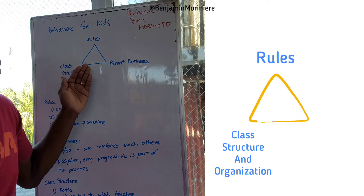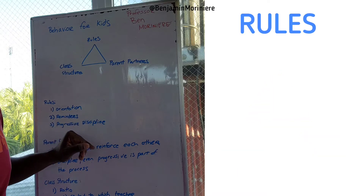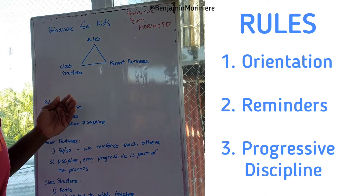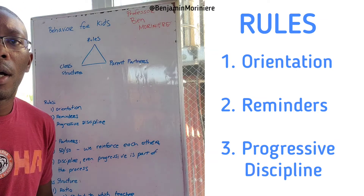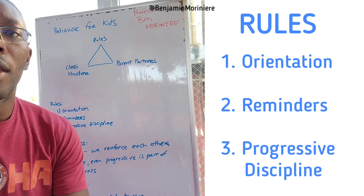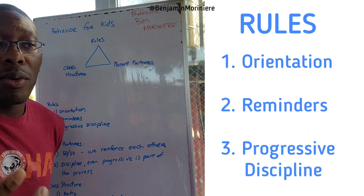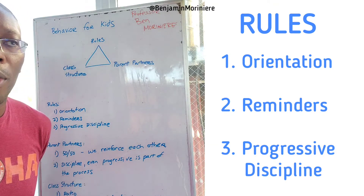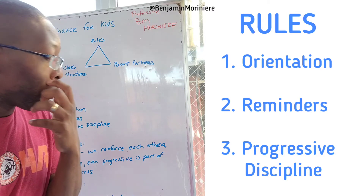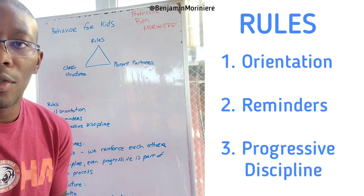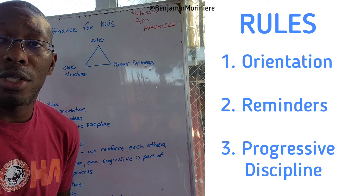Starting with rules — the first element is orientation. How are you orienting everybody to your classroom? That new student should be taken through not just the history of your school, but also the rules and why you have them. In class, I'll remind everybody about the rules at the beginning, or when we start sparring — for safety purposes, like don't punch anybody harder than you want to get punched, don't slam anybody, don't walk on the mat with shoes on because germs from outside will end up on your face.